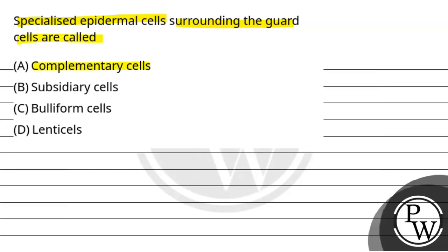First option is complementary cells, second option is subsidiary cells, third option is bulliform cells, fourth option is lenticels.